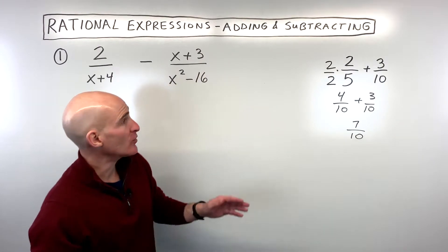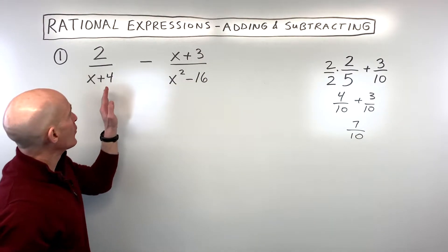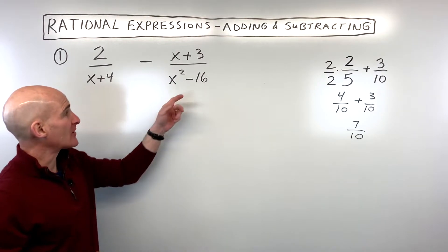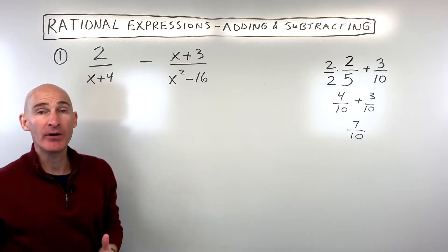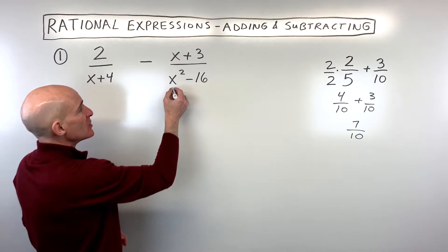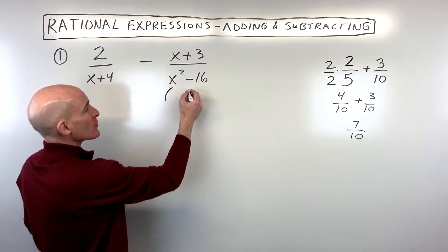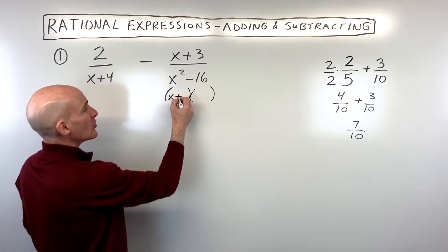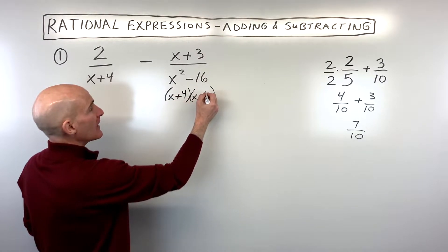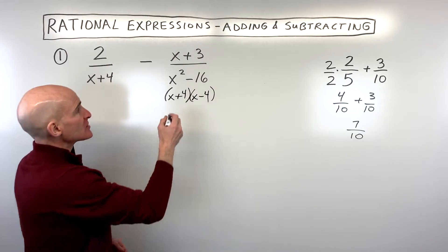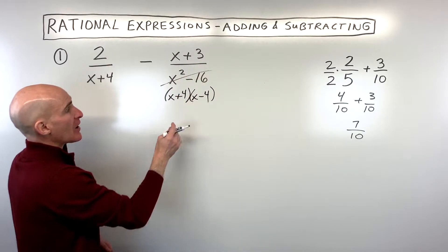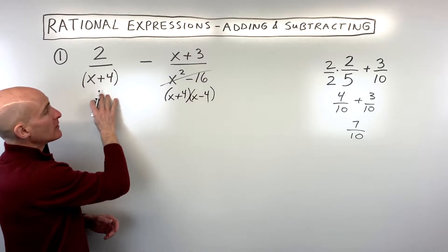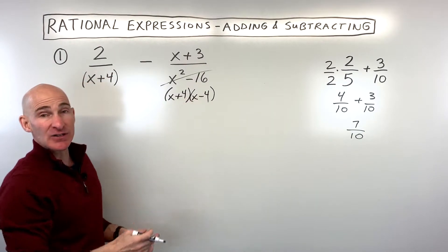Similarly, with these rational expressions, we want to get a common denominator. But before we do that, you want to factor the denominators to see what they're made up of. In this case, you can see that this is a difference of two perfect squares. So when we factor it, it's going to factor to x plus 4 and x minus 4. So this is our denominator.